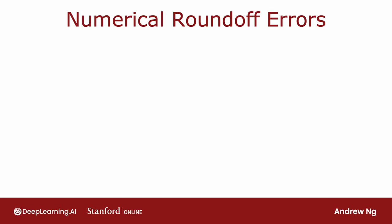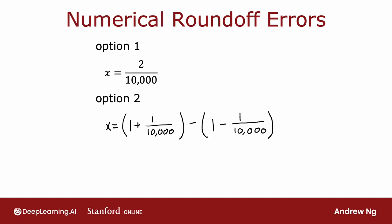Let me show you two different ways of computing the same quantity in a computer. Option 1, we can set x equals 2 over 10,000. Option 2, we can set x equals 1 plus 1 over 10,000 minus 1 minus 1 over 10,000, where you first compute this and then compute this and take the difference. If you simplify this expression, this turns out to be equal to 2 over 10,000.